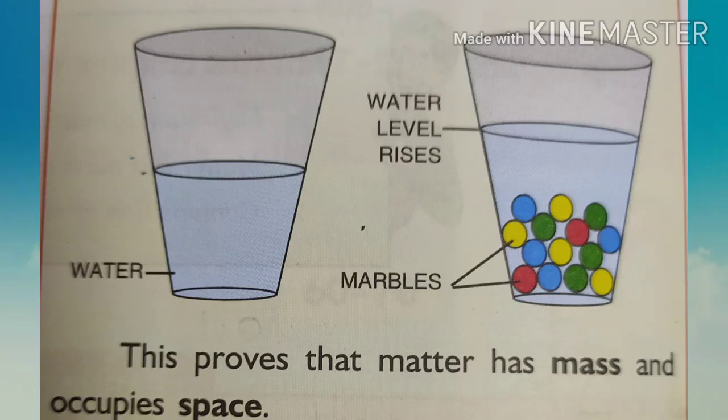Matter has mass and occupies space — this can be proved by an activity. Take a glass tumbler and fill one-third of it with water. Put a mark on the glass to measure the level of water, then weigh it on a balance. Now take some marbles and put them into the water one by one. After some time, you will notice that the water level crosses the mark and rises, because the marbles occupy space. Weigh the glass with the marbles — you will find that the second mass is greater than the first, proving that matter has mass and occupies space.